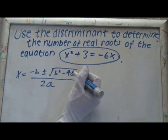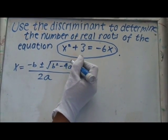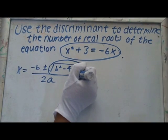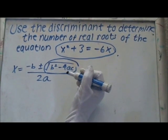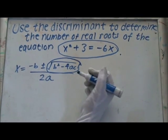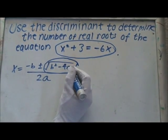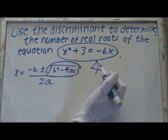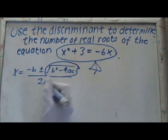This is the quadratic formula. This part here is called the discriminant because you use it to find out how many real roots of the equation there are. So, find the discriminant of this equation. Use this part.